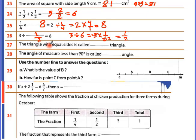A triangle with all equal sides — as the name says — is equilateral. An angle measure less than 90 degrees is an acute angle.